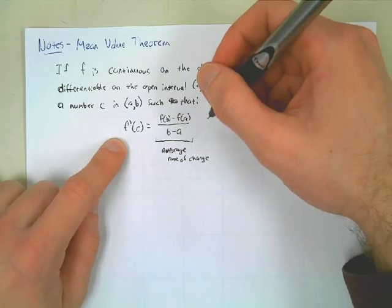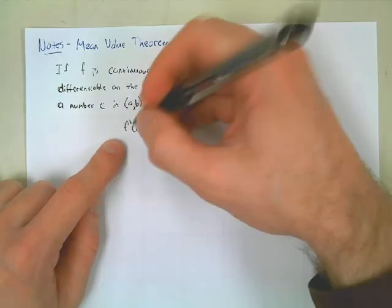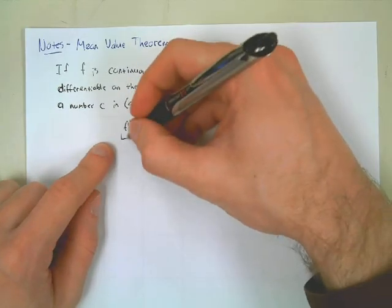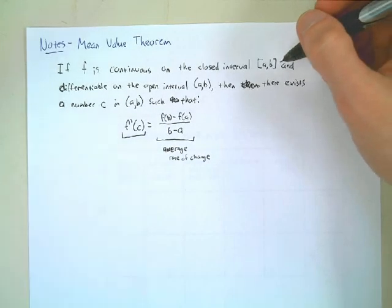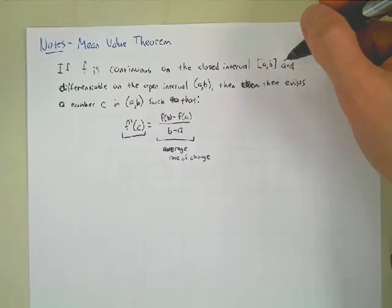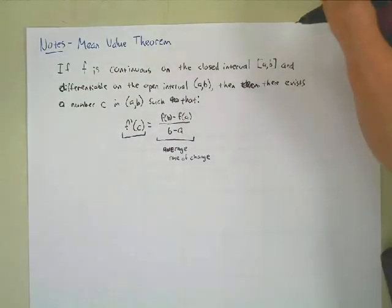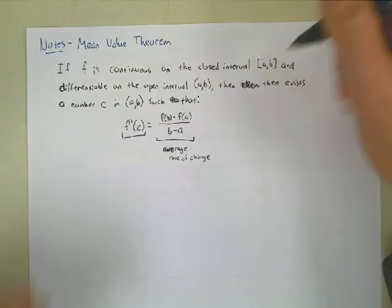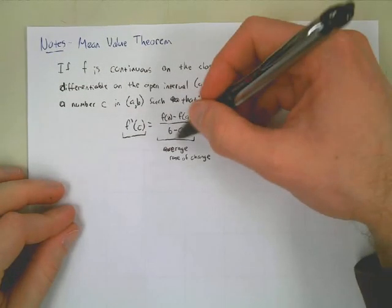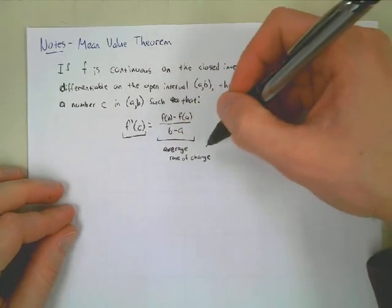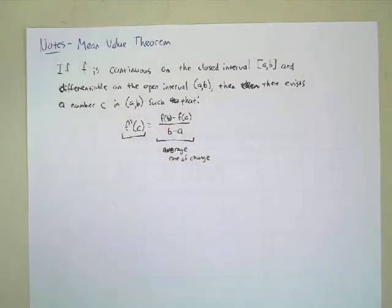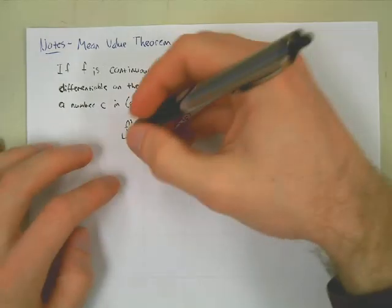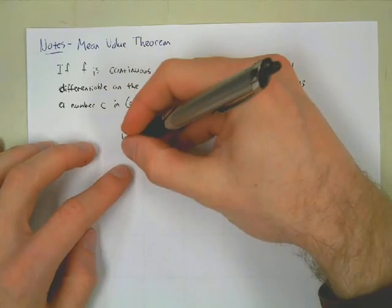That's the instantaneous rate of change. Remember, the derivative is the slope at a point — it is the tangent slope, so that's why it's at an instant, because it's one point. The average rate of change is the rate of change between two points, so we're finding the average of the slope between those two points.